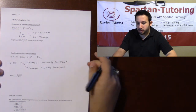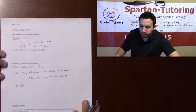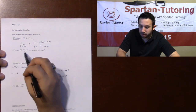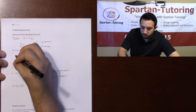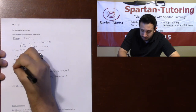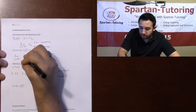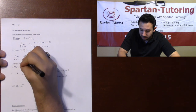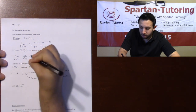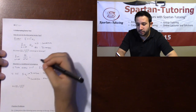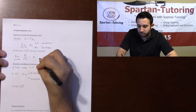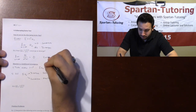Let's run through an example: the sum of negative one to the n times square root of n over n squared plus one. Take the limit as n goes to infinity of square root of n over n squared plus one. The bottom is heavier, so this limit is zero, and because the limit is zero, it converges by the alternating series test.